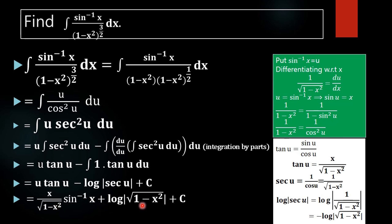Substituting back, we get sin inverse x times x by square root of (1 minus x squared), minus log mod of 1 by square root of (1 minus x squared), plus C. Using the logarithm identity log(1 by a) equals negative log a, the term minus log mod of 1 by square root of (1 minus x squared) becomes plus log mod square root of (1 minus x squared), giving the final answer.